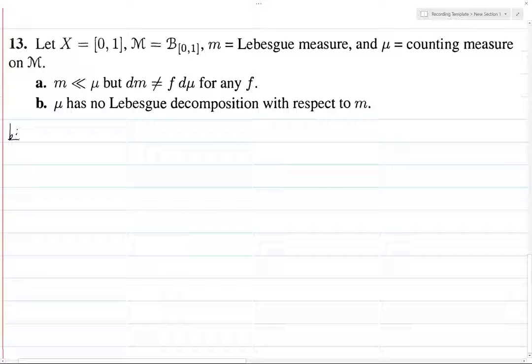Mu has no Lebesgue decomposition with respect to m. What does this mean exactly? I claim that there do not exist alpha and beta, positive measures on M, such that mu equals alpha plus beta, alpha is absolutely continuous with respect to m, and beta is mutually singular with respect to m.